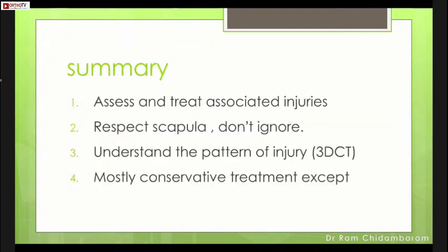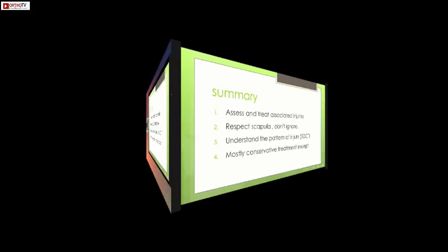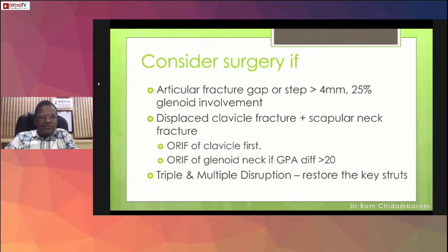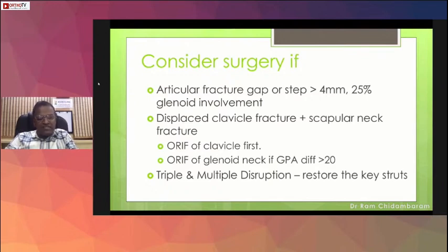To summarize: assess and treat associated injuries first. Respect the scapula — do not ignore it. Understand the injury pattern with 3D CT. Treatment is mostly conservative, except for articular fracture gap or step greater than 4mm, significant glenoid involvement, or displaced clavicle fracture with scapular neck — the classical floating shoulder. My recommendation: fix the clavicle first, then fix the glenoid neck only if there is significant displacement or multiple disruption. Restore the key strut to maintain the mechanism of shoulder suspension.